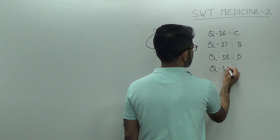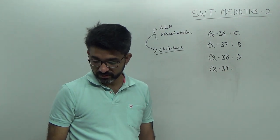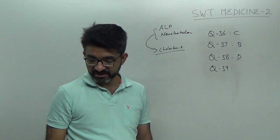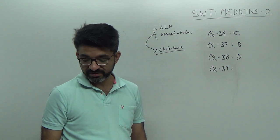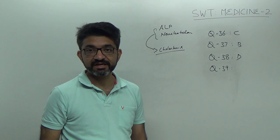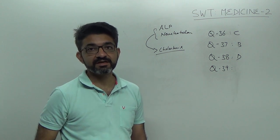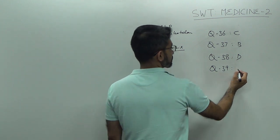Question number 39, low serum alkaline phosphatase. See, primary biliary cirrhosis will cause increased alkaline phosphatase. Hyperphosphatasia is seen with high alkaline phosphatase. Similarly, hepatitis A. In cholestatic phase, hepatitis A can cause increased alkaline phosphatase. So, the answer is hypothyroidism.